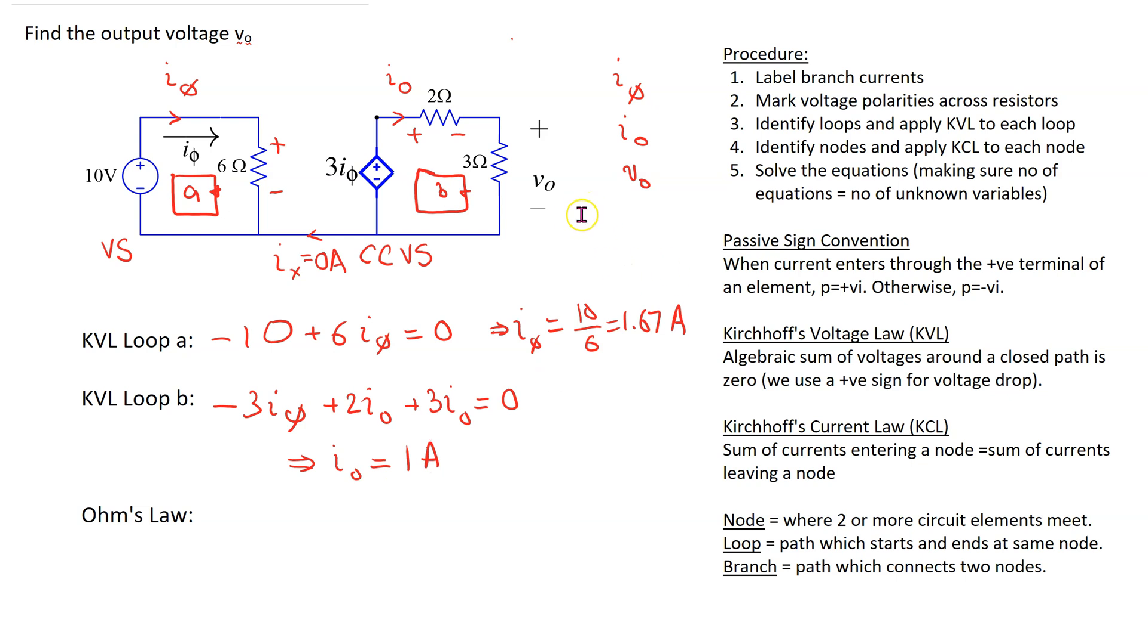Finally, we need to find this voltage V0, and this voltage V0 is, applying Ohm's law, plus 3I0. So this is equal to 3 volts. Thus, we have one way of finding the output voltage.